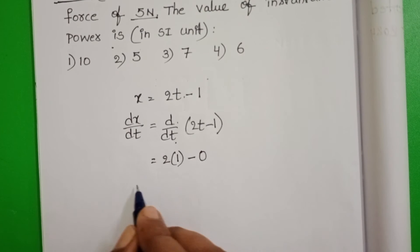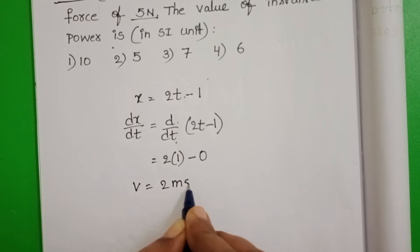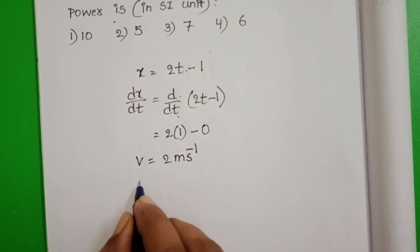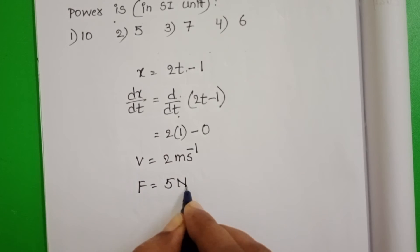In place of dx/dt take velocity, so velocity is 2 meters per second. We know velocity and also in the given problem we know force, force equals 5N.